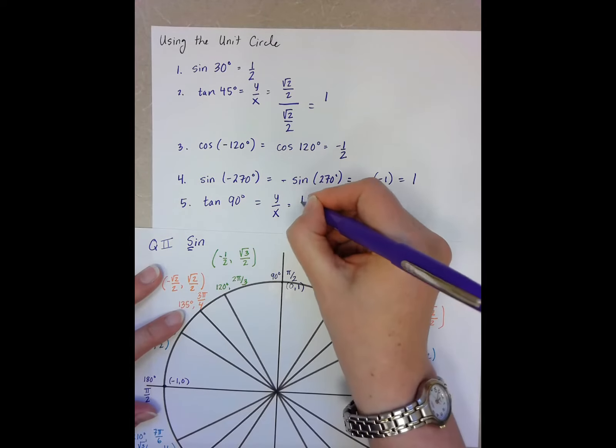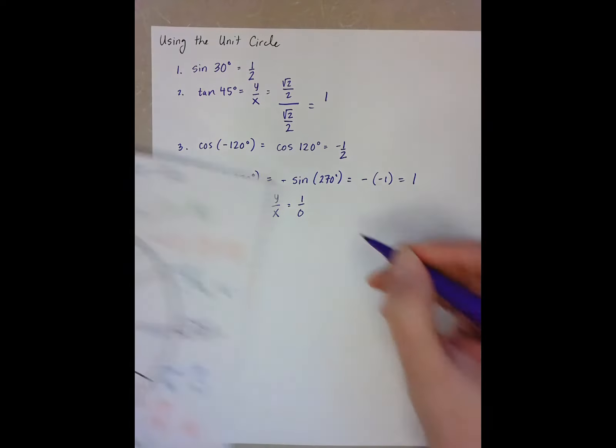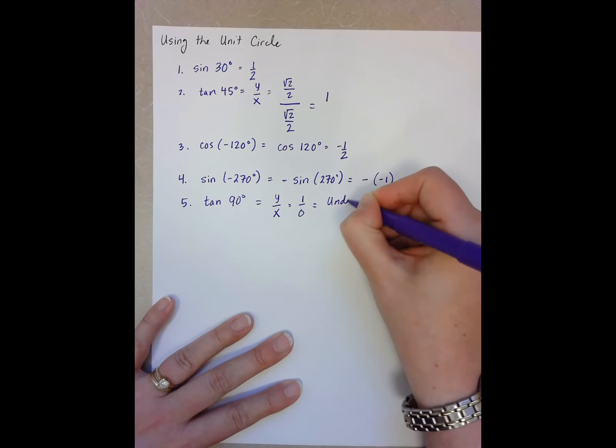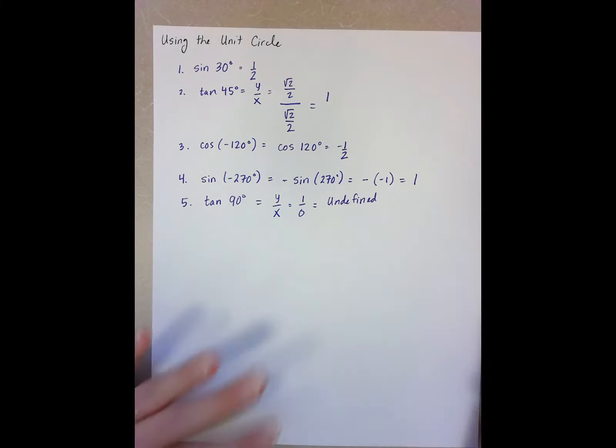my y is 1 and my x is 0. So it turns out that tan of 90 is undefined because I can't divide by 0. I can't take one cookie and split it among 0. It doesn't really make any sense.